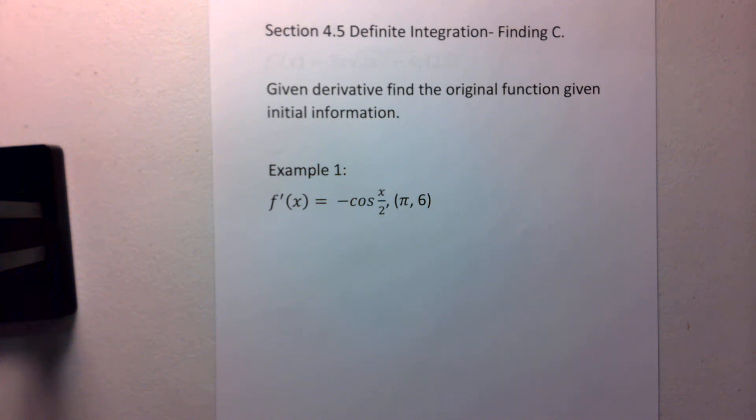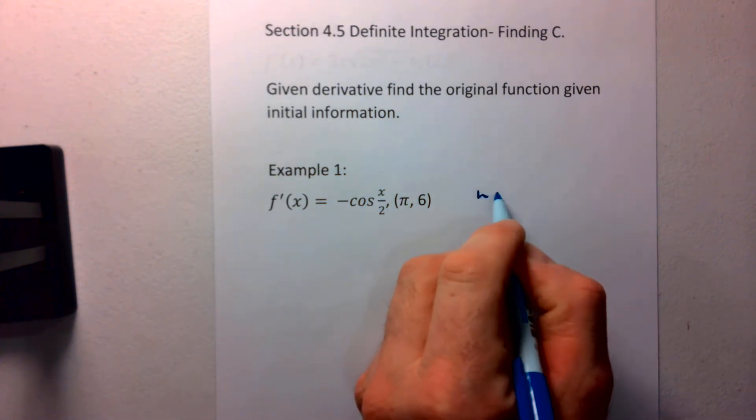Let's continue our discussion in section 4-5, our definite integration. Today we're going to spend time finding c. We've done this finding c before back in the first section or two of chapter 4, so it shouldn't be too miserable. We're just going to see a little u substitution with this definite integration. I'm not going to spend a whole lot of time boring you with our notes.